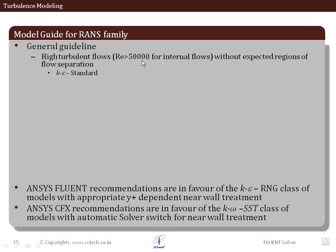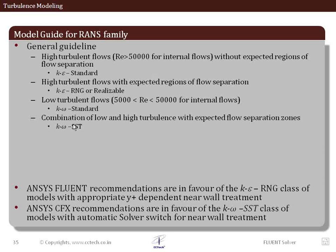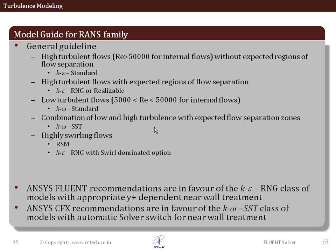As a general guideline, for high turbulent flows beyond Reynolds number 50,000 for internal flows, we can expect flow separation to be minimal and k-epsilon standard can be used. K-epsilon RNG or realizable can be used for better prediction if flow separation is also taking place. For low turbulent flows below the high turbulent regime, k-omega SST can be used. For highly swirling flows, we usually go for the Reynolds Stress Model (RSM) which does not assume isotropic eddy viscosity, or k-epsilon RNG with swirl-dominated option available in ANSYS Fluent with reduced computational effort.